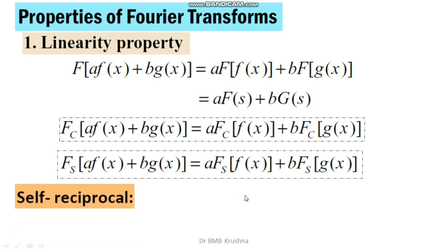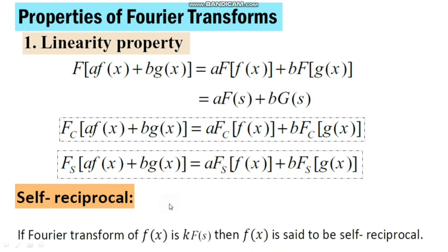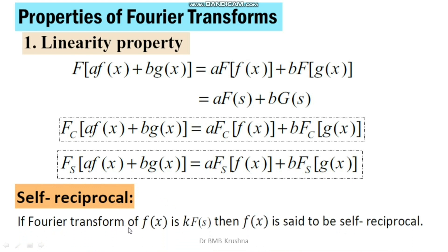The self-reciprocal property: when the Fourier transform of a function f(x) is some scalar multiple of f(s), then the function f(x) is said to be self-reciprocal.